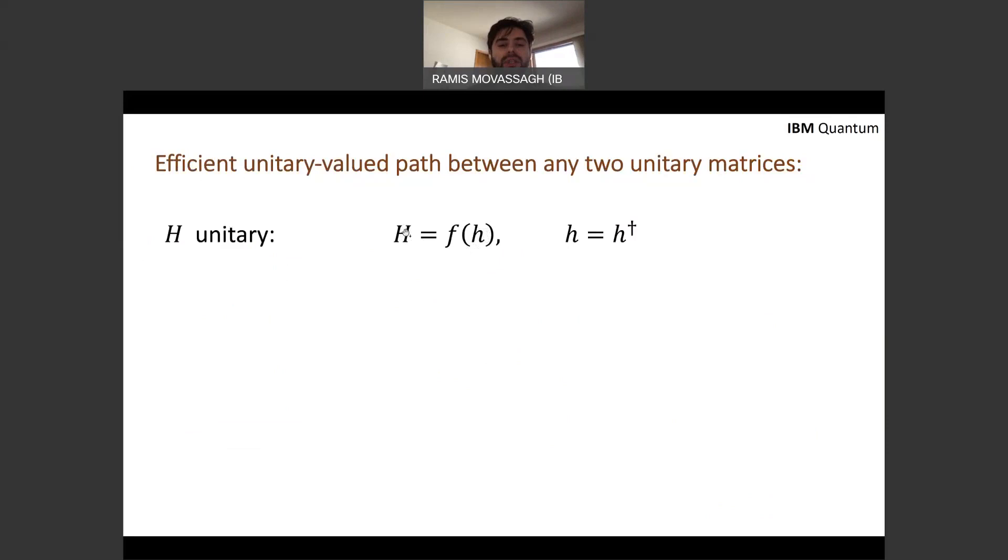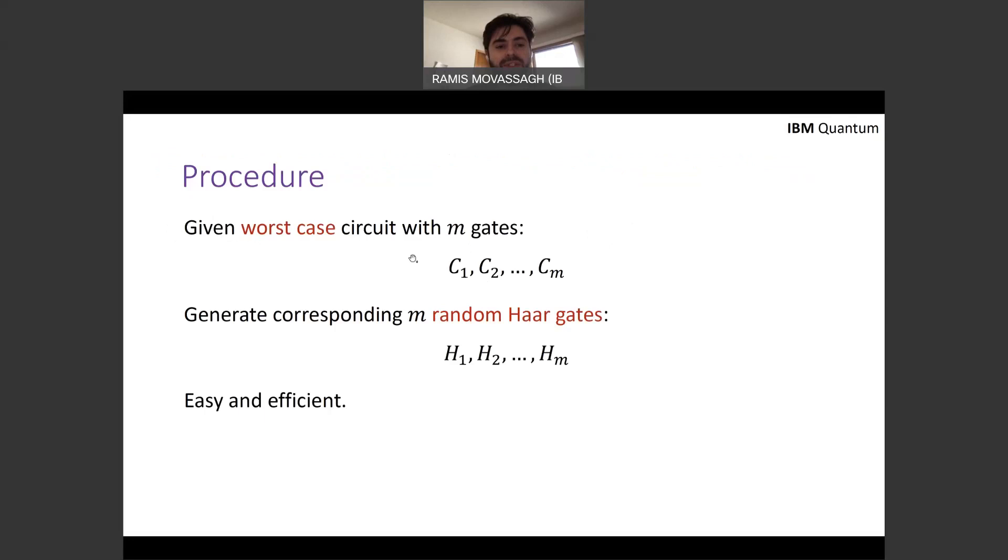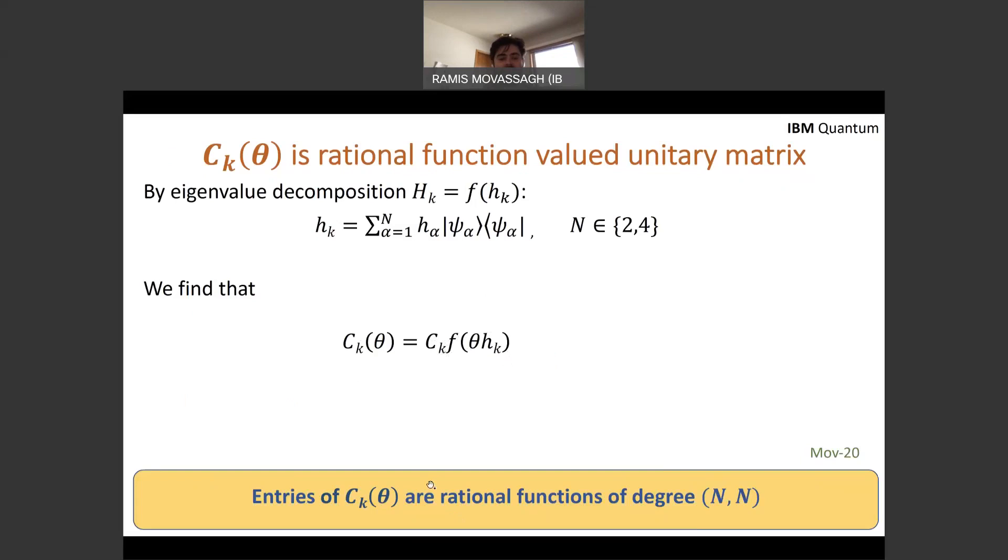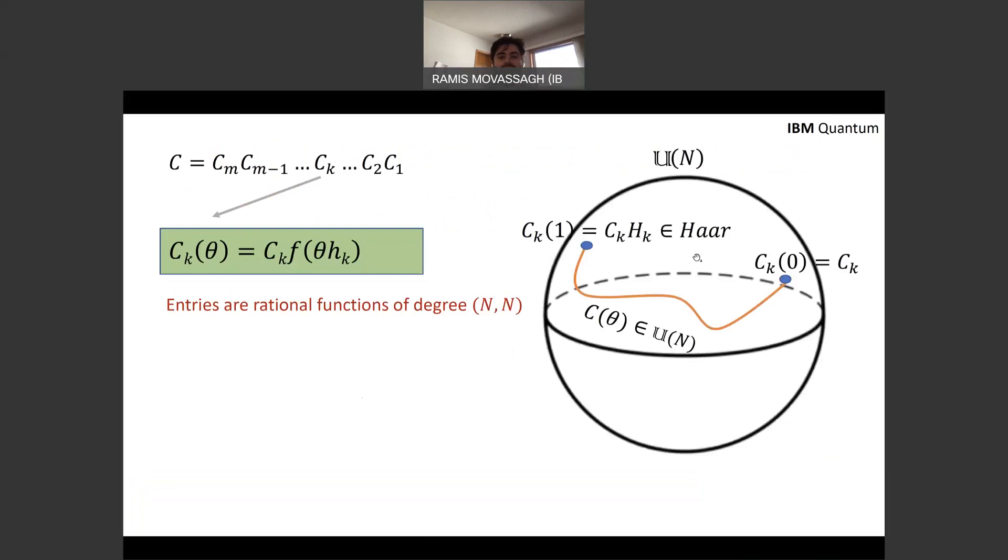So the procedure is that we know there's a worst case circuit with M gates, C_1 to C_M. We can generate very efficiently M corresponding random Haar gates. And then we define the path C_K of theta to be the worst case gate C_K, so this is the Kth gate times F of theta H_K. Now, it is easy to see using some algebra that every entry of this gate will be a rational function of degree NN. That is, the numerator is a polynomial of degree capital N and denominator is a polynomial of degree capital N, where capital N is the size of the local gate. So it's two or four.